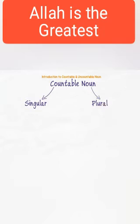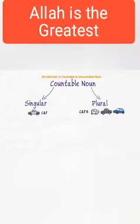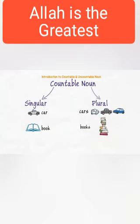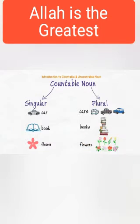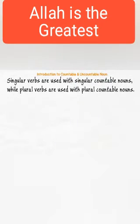The countable noun has both singular and plural forms. For example: car, book, and flower are singular forms; cars, books, and flowers are plural forms. Remember, singular verbs are used with singular countable nouns,